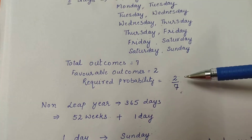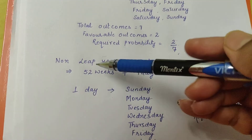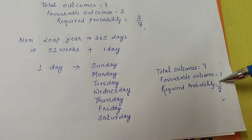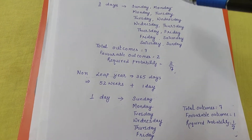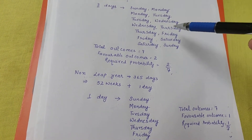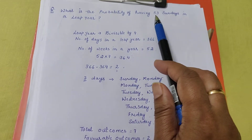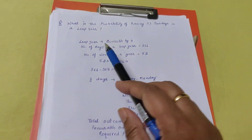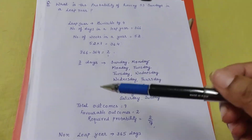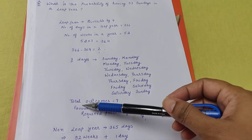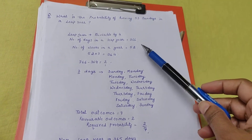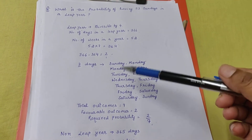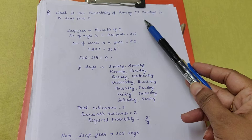So in a leap year the probability of 53 Sundays is 2/7, and in a non-leap year it is 1/7 — that is the key difference. Now, if the exam question asks what is the probability of having 52 Sundays in a leap year, the answer is 1 — it is a sure event, because 52 Sundays will definitely occur.